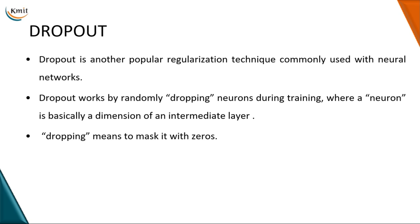Another regularization technique is dropout, which is another popular regularization method commonly used with neural networks. Dropout works by randomly dropping neurons during training, where a neuron is a dimension of an intermediate layer and dropping means masking it with zeros. Dropout penalizes the model's reliance on particular features, forcing it toward a more generalized model. Dropout is very easy to implement and effective in practice, and is used as the default regularization technique in most deep learning models.